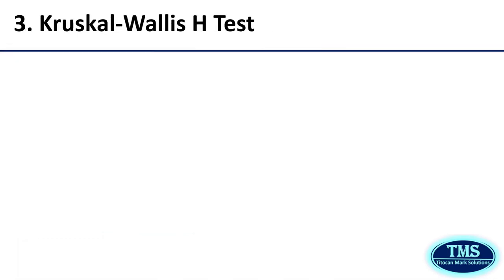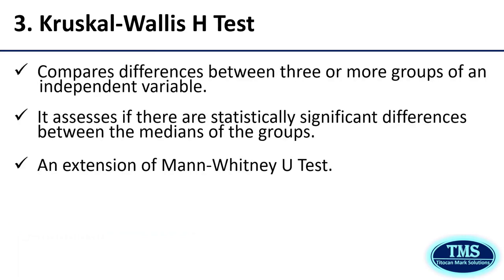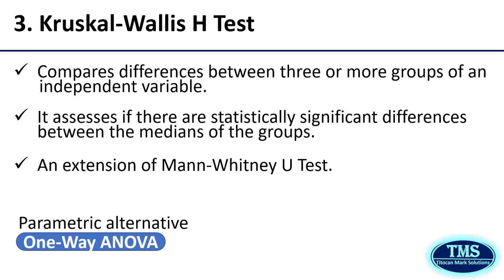Third, the Kruskal-Wallis H test. The Kruskal-Wallis H test is used to compare differences between three or more groups of an independent variable, and it is basically used to assess whether there are statistically significant differences between the medians of three or more independent groups. It is an extension of the Mann-Whitney U test to multiple groups and serves as a non-parametric alternative to one-way ANOVA. It is useful when the assumptions of one-way ANOVA are not met, such as when dealing with ordinal data or when the data are not normally distributed.